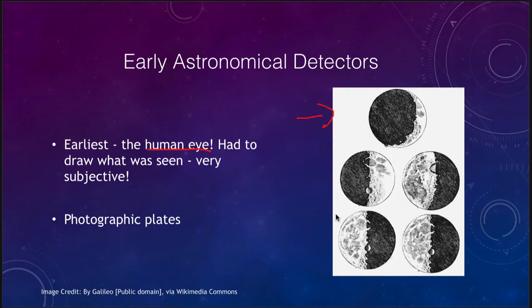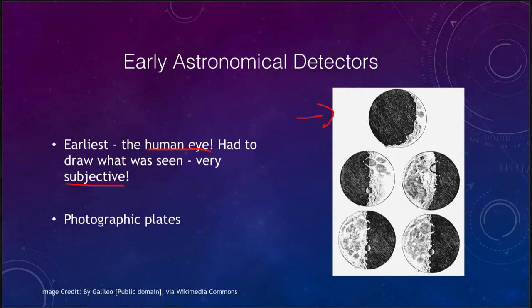What people would do was glance through the telescope and then draw their image. Here we see some sketches made by Galileo of the moon. These were rather subjective — they're not going to be exactly the same each time because of atmospheric conditions and even personal perspective. Five people could observe the moon and see slightly different things; you'd expect the basic patterns to be the same, but the details would differ depending on each person's eye.